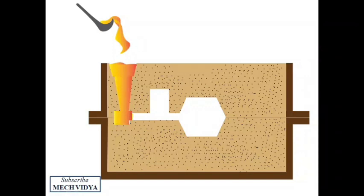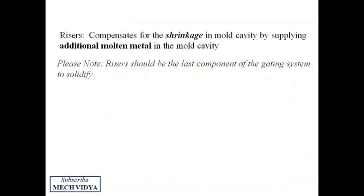So risers compensate for shrinkage by supplying extra molten metal in the mold cavity. And to do this, we have to ensure that the riser is the last component of the gating system to get filled with the molten metal.